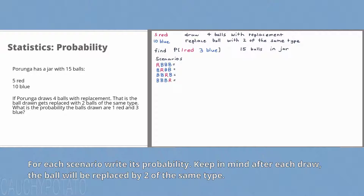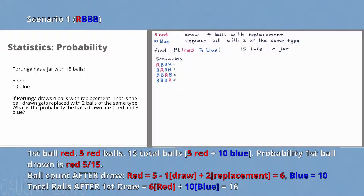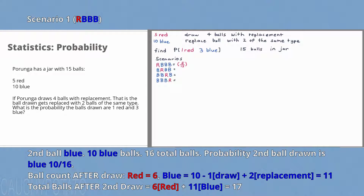Now let's take a look at the probability for each scenario. Remember, we are drawing with replacement, where we replace the ball with 2 of the same type. First ball drawn is red: 5 balls out of 15 total, so 5/15 probability. Second ball drawn is blue: there are 10 blue balls in the jar. Since we drew 1 red ball, there are 14 balls left, but with replacement by 2, so 16 balls total for the second draw — giving 10/16 probability.